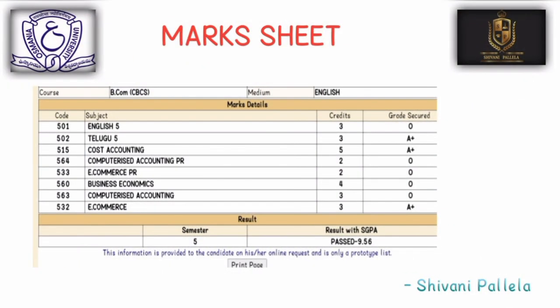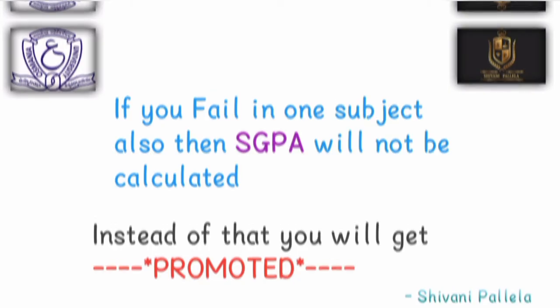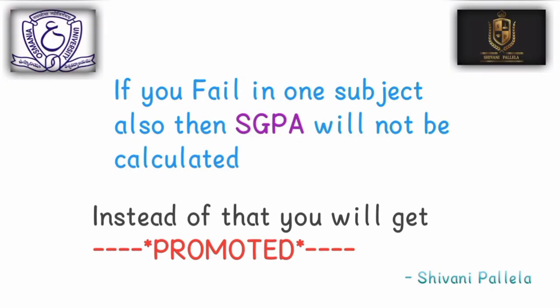You can check the information on screen. In the marks list, the O grade corresponds to 92 and above marks. You can check the O grade, A-plus grade, and calculate your SGPA from the grade points shown. If your SGPA is not calculated because of a backlog, you will still be promoted conditionally — promoted means you move to the next semester, not that all subjects are passed.